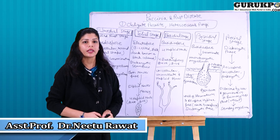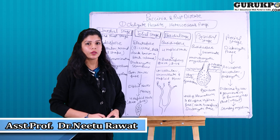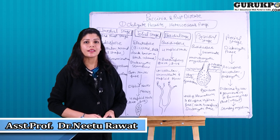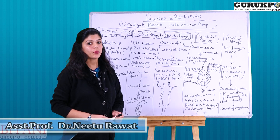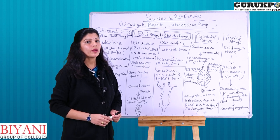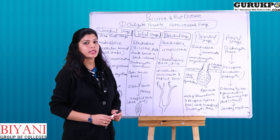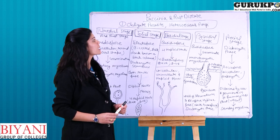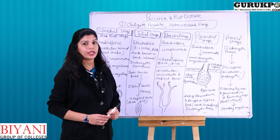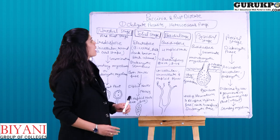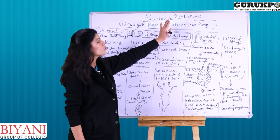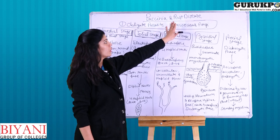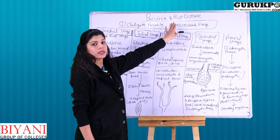Good morning. My name is Dr. Neetu Rawat, working as an assistant professor in Biyani Girls College. On behalf of Guru KPO, I welcome you all. Today we will discuss a plant disease — Puccinia and rust disease in wheat plant. Puccinia is a fungal disease which causes rust disease in wheat plant.